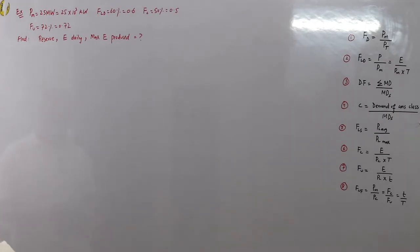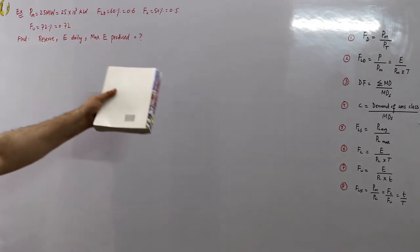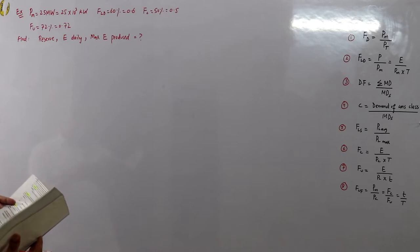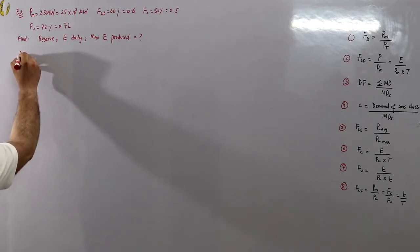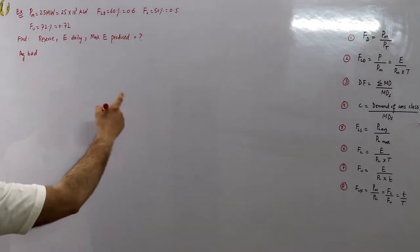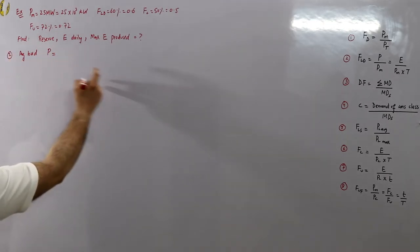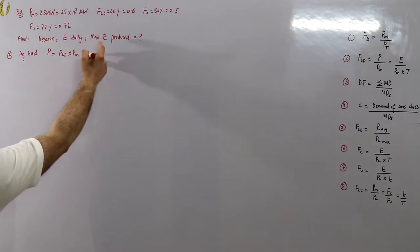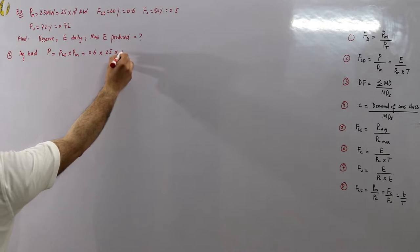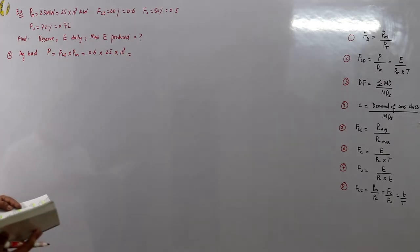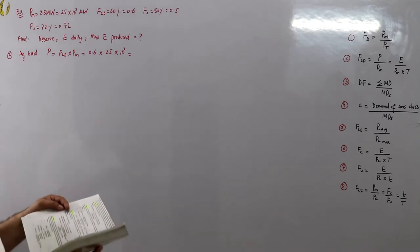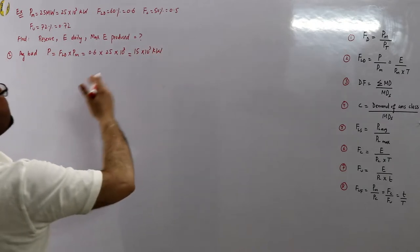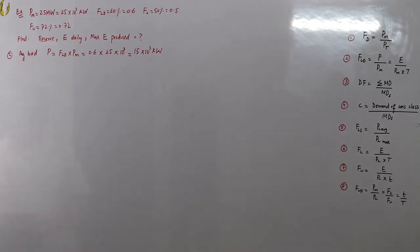First, from the definition of load factor — average load divided by maximum demand — we can find the average load. Average load P equals FLD multiplied by PM, which is 0.6 × 25×10³ kW, giving us 15 megawatts.